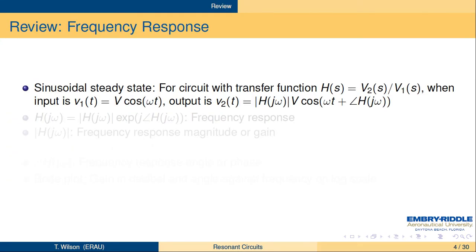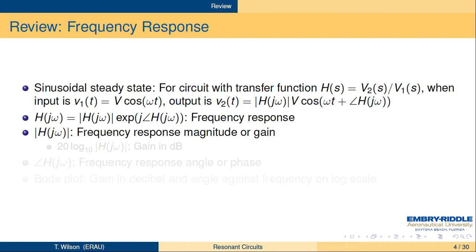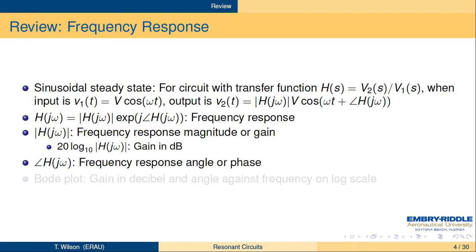To review: in sinusoidal steady state, for circuits with a transfer function H(s) — the output voltage over input voltage — when the input is a cosine at frequency omega, the output is a cosine at the same frequency with gain multiplied by |H(jω)| and phase increased by angle H(jω). We write H(jω) in complex form as |H(jω)|·e^(j·angle H(jω)). The magnitude is called the frequency response gain, expressible in decibels as 20·log₁₀|H(jω)|. The phase angle is called simply the phase. Bode plots show gain in dB and angle in degrees versus frequency on a log scale.